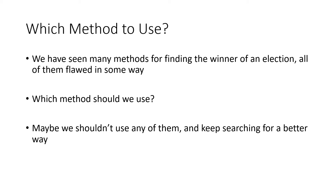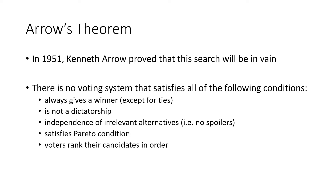So which of these methods should we use? We could say maybe we shouldn't use any of them and keep searching for a better way. Unfortunately, this search is going to be in vain because there's something called Arrow's Theorem that was proved back in 1951 — that there is no voting system that satisfies all of the following conditions. There's a list of five conditions and we can't have all five of these. That's what Arrow's Theorem says.